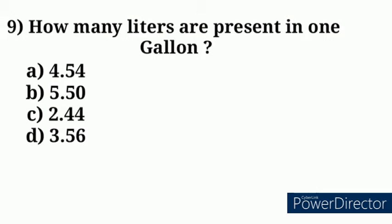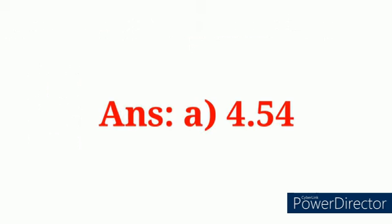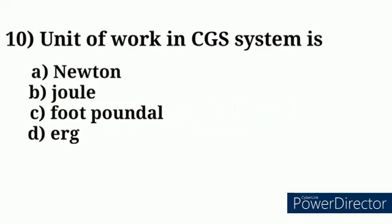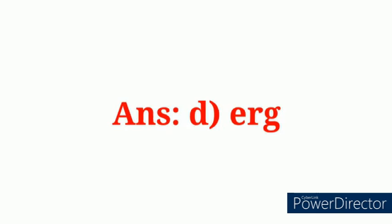Question number 9: How many liters are present in one gallon? Answer option A: 4.54. Question number 10: Unit of work in CGS system is? Answer option D: erg.